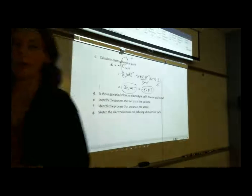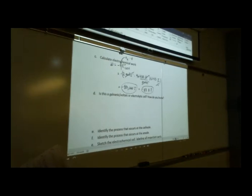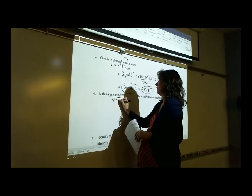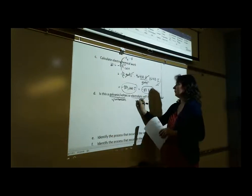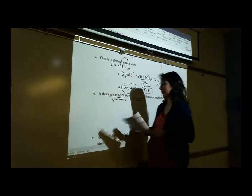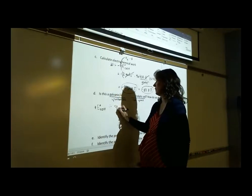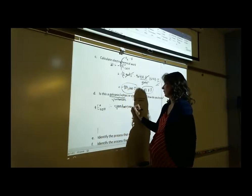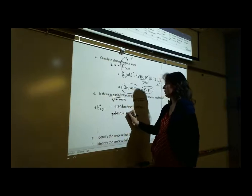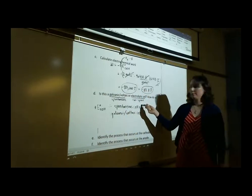For Part D, we're asked: is this a galvanic/voltaic cell, or is it an electrolytic cell? There is a very easy way to tell which one it is. Galvanic/voltaic cells are your spontaneous reactions, whereas electrolytic cells are your non-spontaneous reactions. So we just have to go back and look at our value of E°cell. We had a positive E°cell, therefore this is a spontaneous cell reaction and therefore this is a galvanic cell, which is the same thing as voltaic. If we had had a negative E°cell, then that would have been an electrolytic cell because those are non-spontaneous.